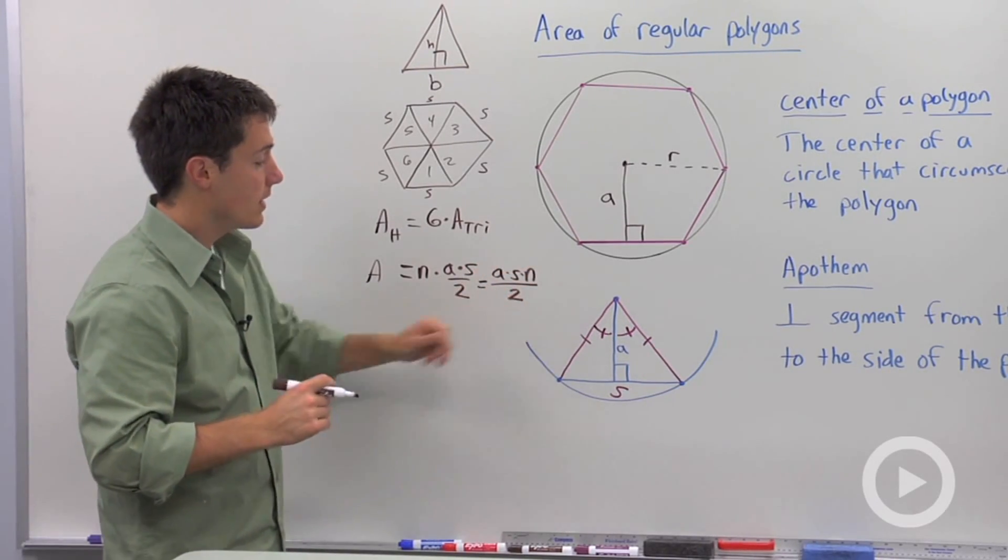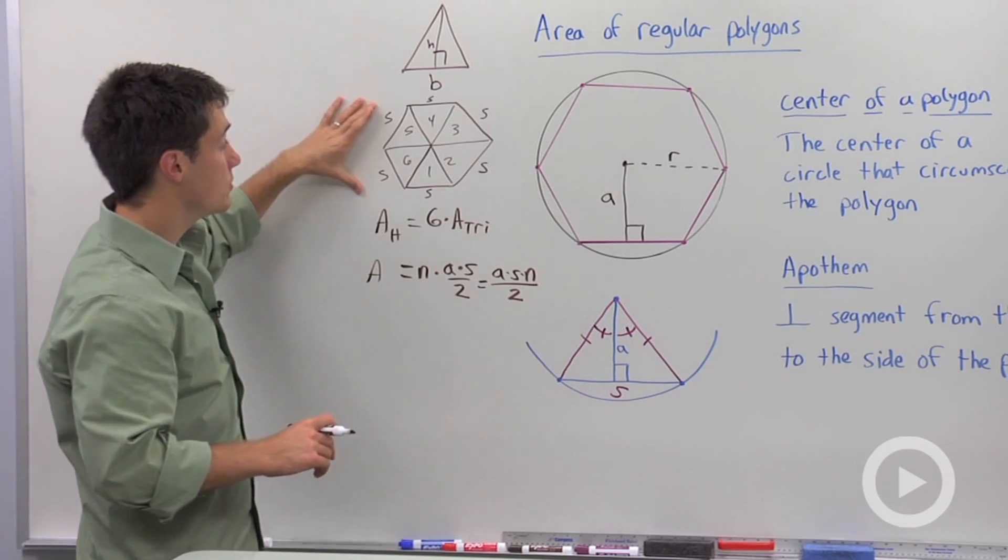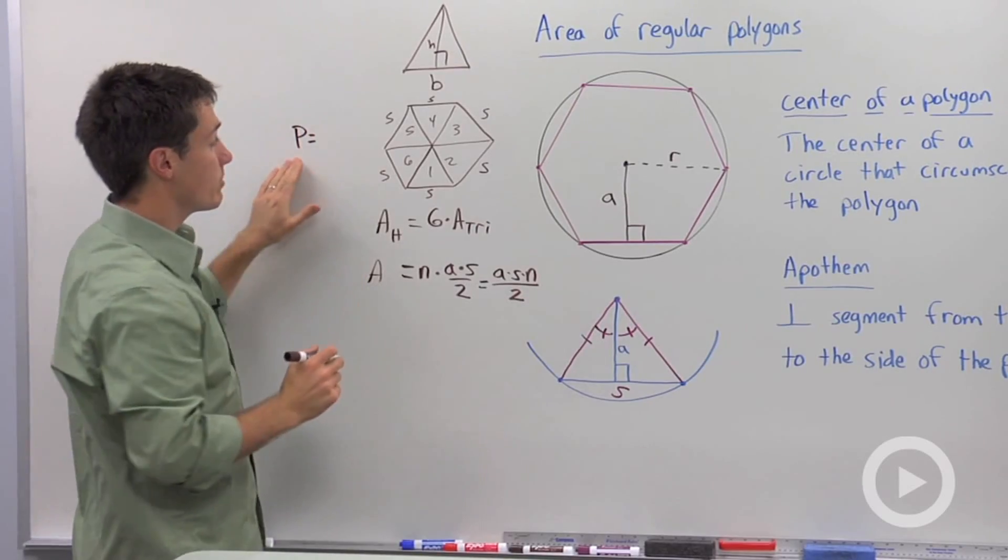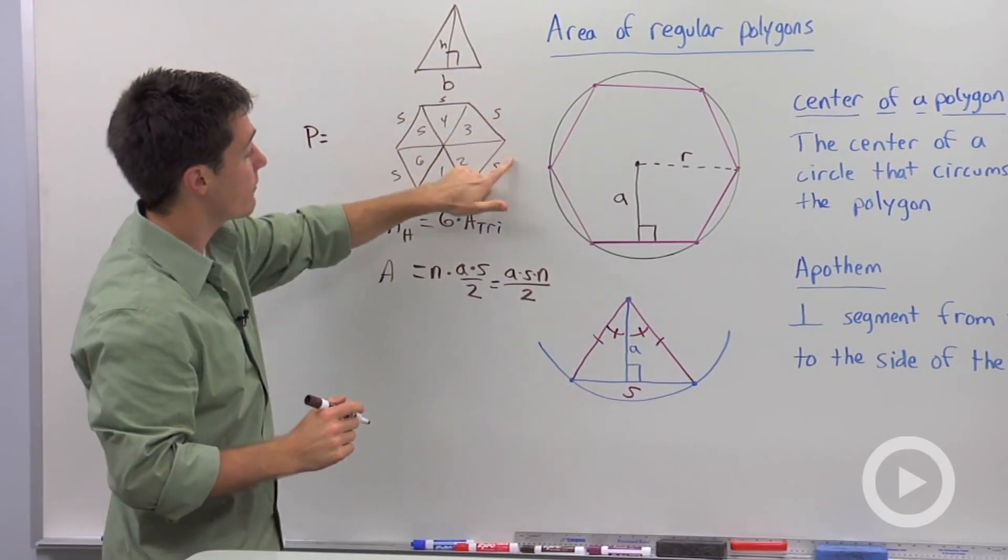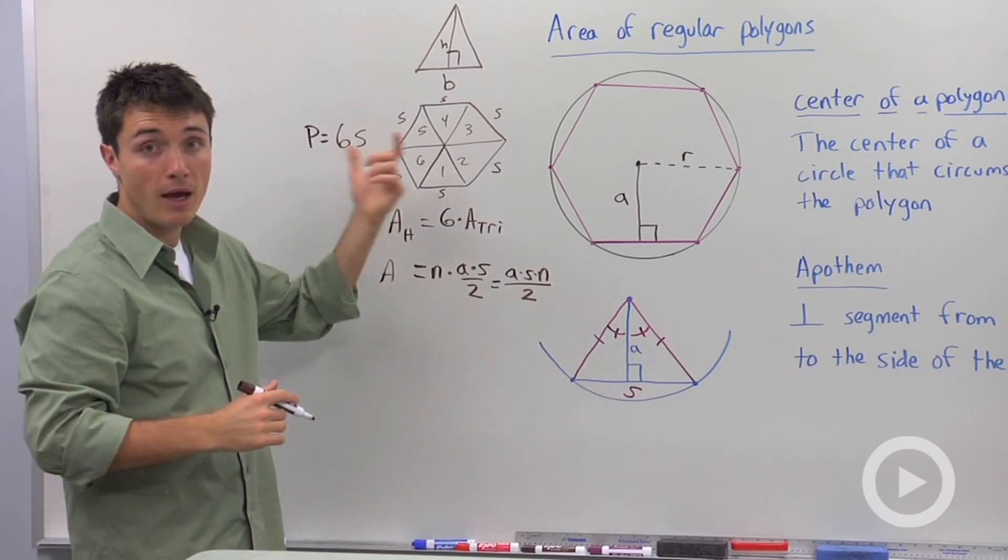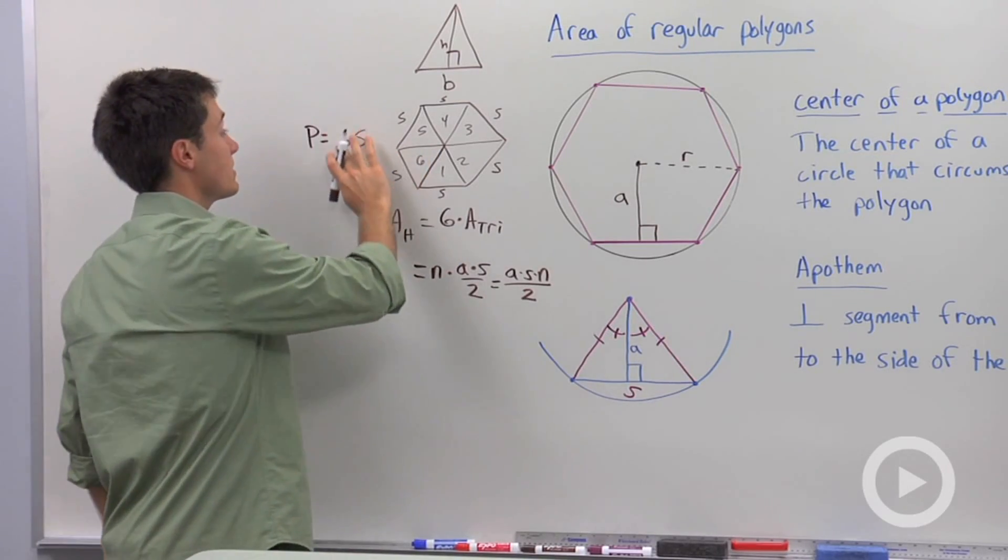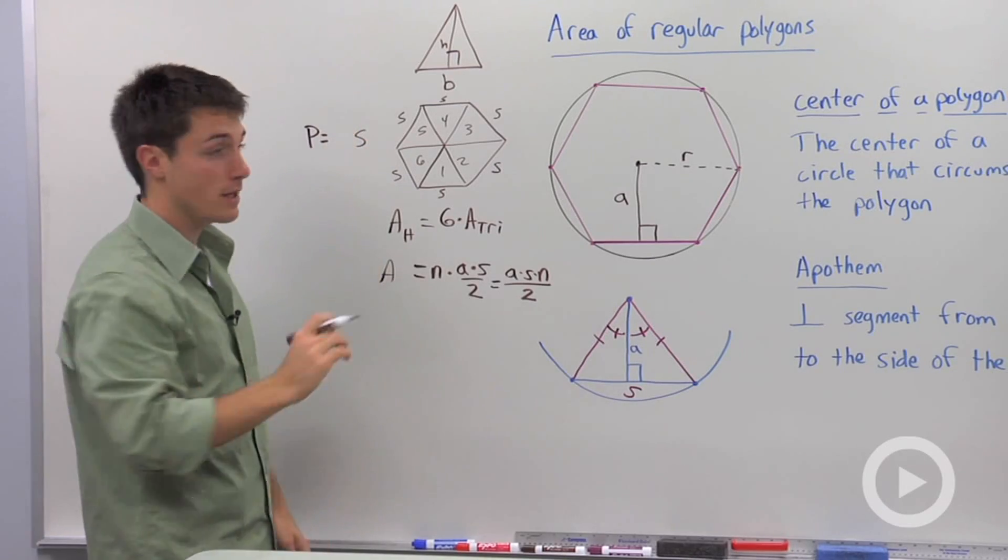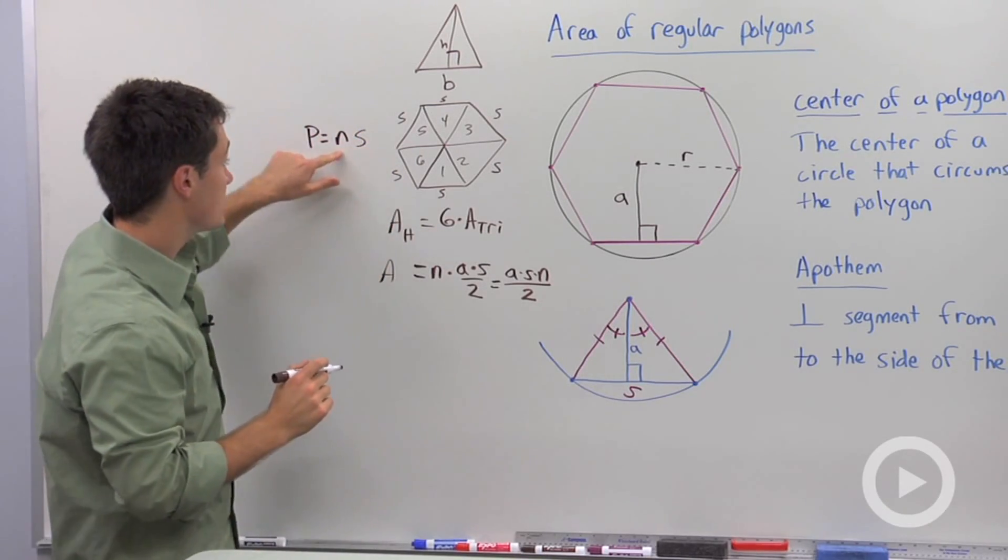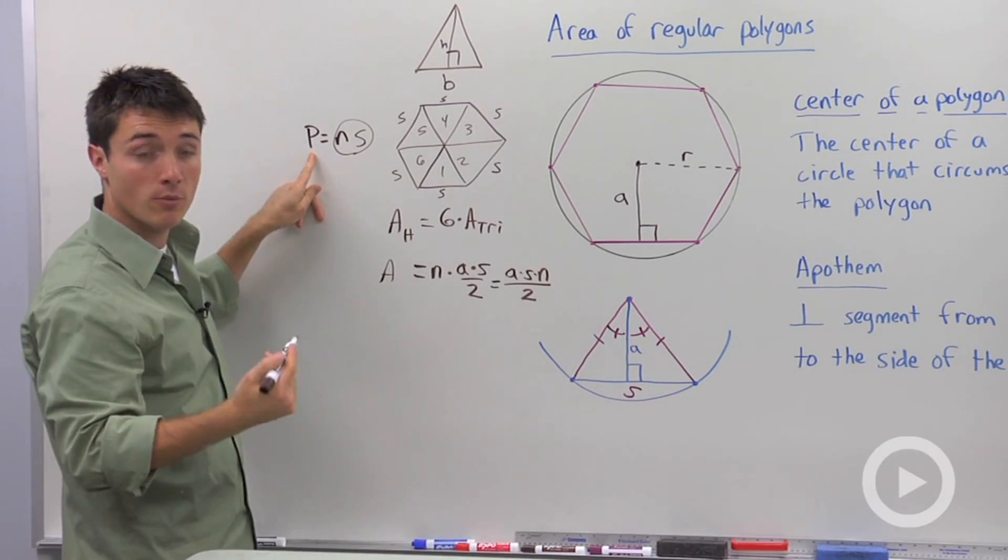Now, if we look at this, I see that I can simplify this a little bit more. Getting back to our regular polygon, the perimeter, capital P, of this polygon is going to be one, two, three, four, five, six S. If I had a pentagon, that would be five S. So what I'm going to do is I'm going to say that the perimeter of any regular polygon is N times S. So I can substitute N for N times S, capital P, which is going to stand for perimeter.